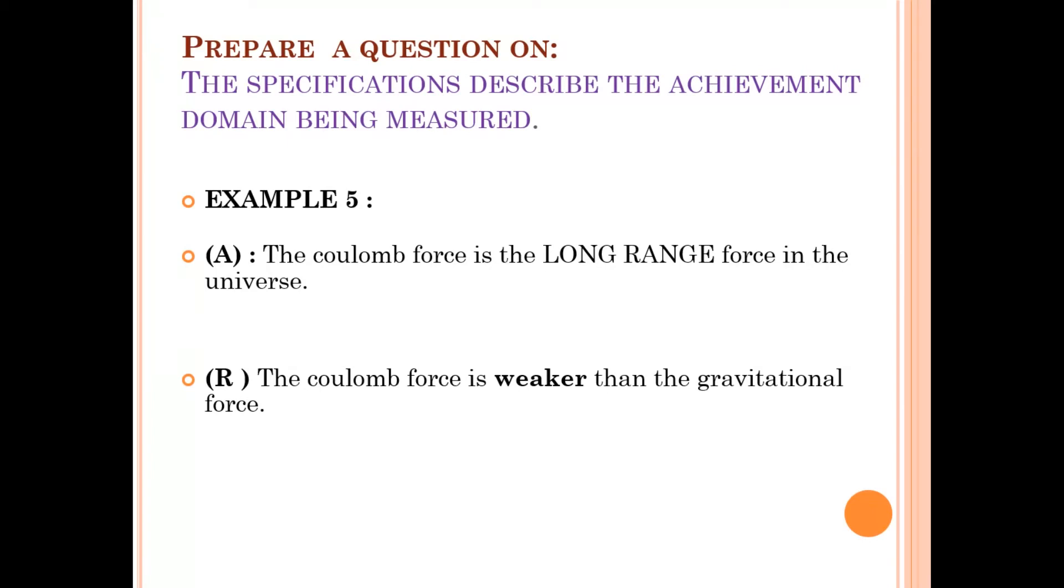The specifications describe the achievement domain being measured. This is another example where the achievement domain can be measured. The assertion: the Coulomb force is the long range force in the universe. The reason given: the Coulomb force is weaker than the gravitational force. Here, which domain we want to check? The knowledge, understanding. In addition, we expect whether the student has wide varieties of forces existing in nature and which one is stronger, which one is weaker. This analyzing ability can be checked by framing such questions.